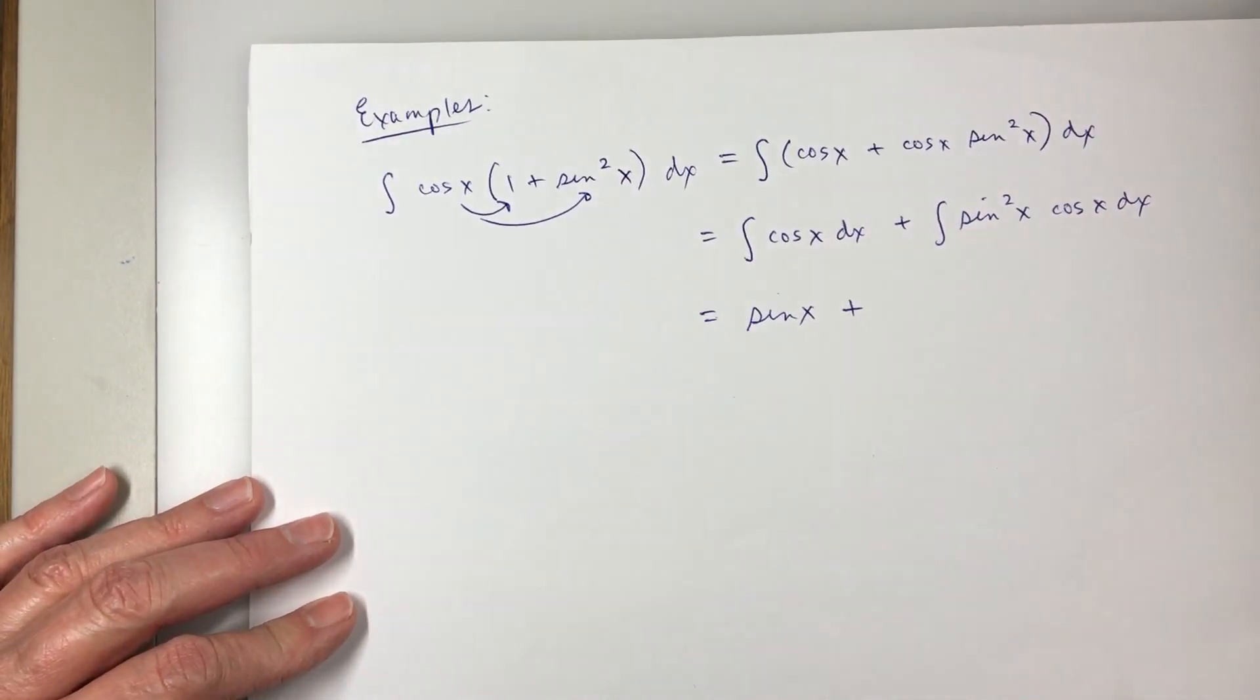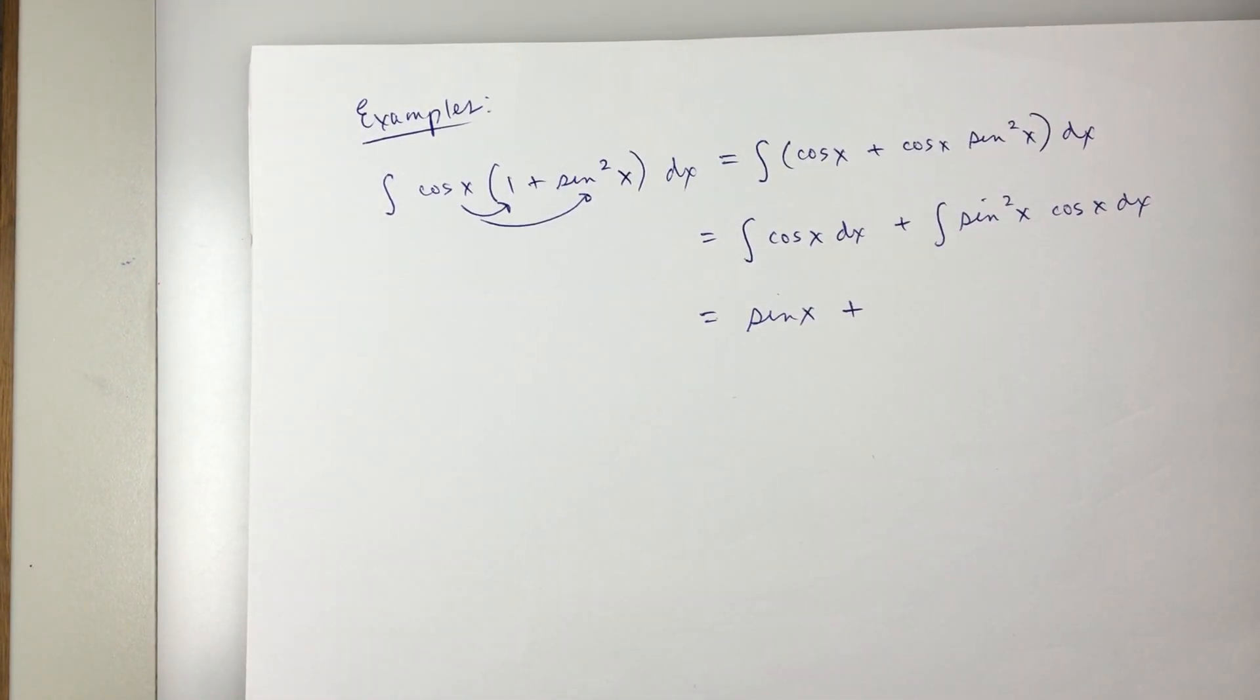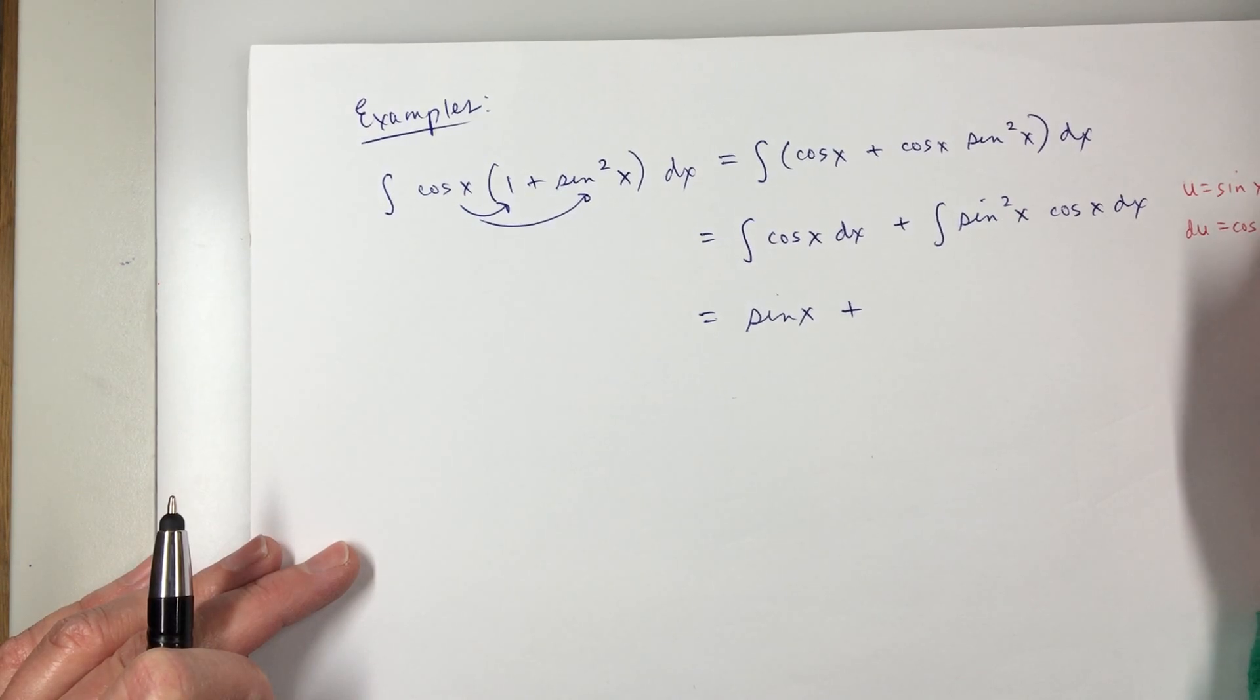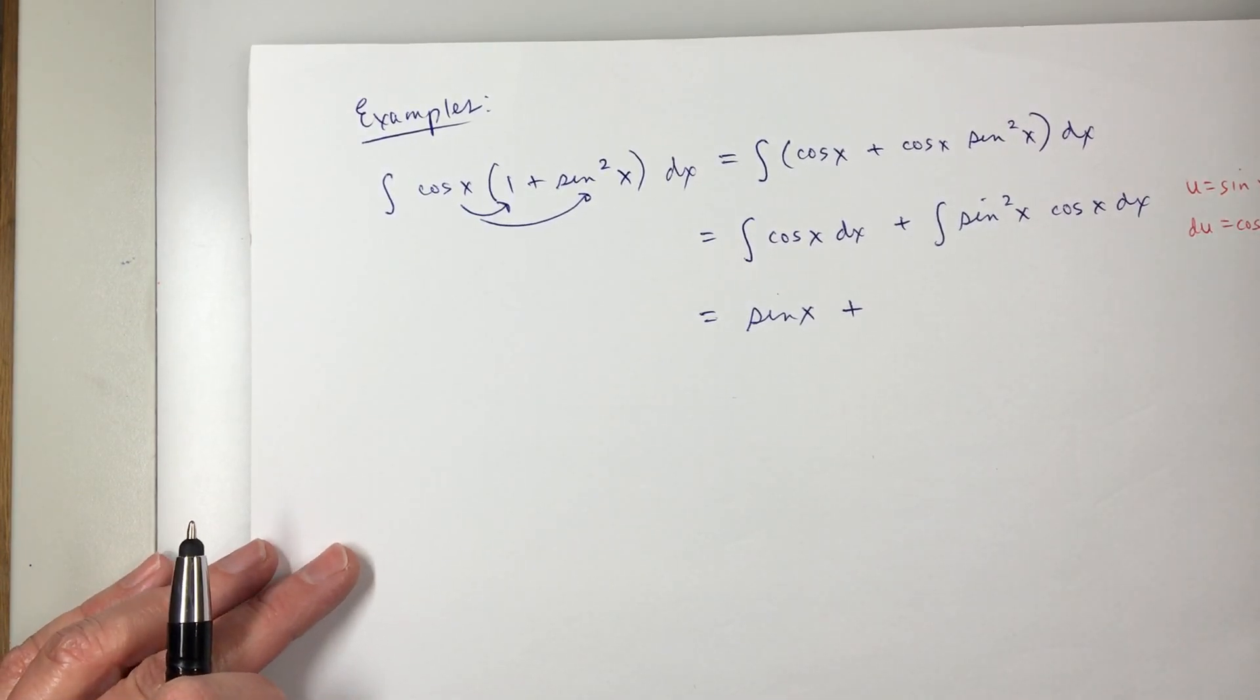And the second part, this is u substitution. u equals sine x, du, derivative of sine is cosine x, cosine x dx.